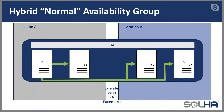Going on to something a little more modern — let's talk about AGs, which have been in the product since SQL Server 2012. Up until SQL Server 2016, this is how everything had to look. Underneath your availability group, you have a cluster — either a Windows Server failover cluster (WSFC) or Pacemaker if you're using Linux — and you would extend that cluster from on-premises up to Azure. That means things like your witness, or the similar concept called STONITH in Pacemaker, all have to work because you're bridging two different locations.